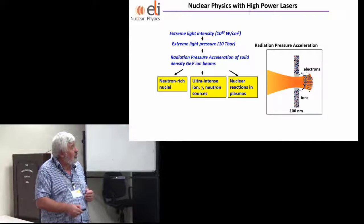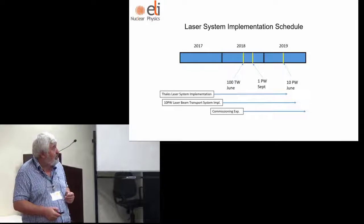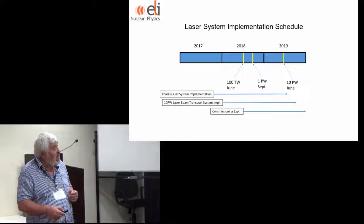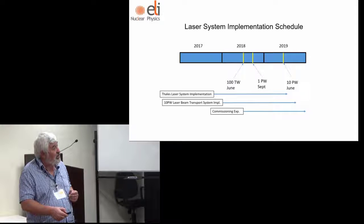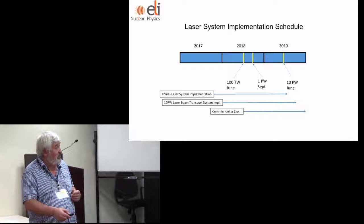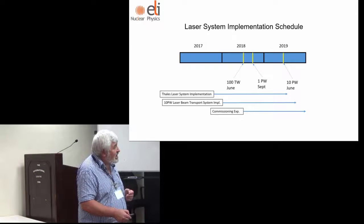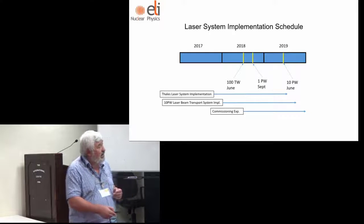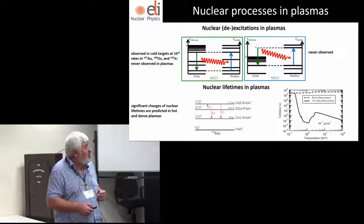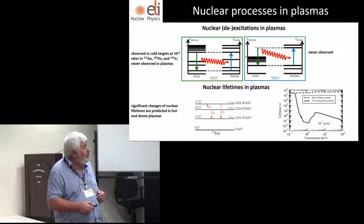We want to have ultra-intense ion, gamma, or neutral sources and we want to study nuclear reactions in plasmas. The timeline: we expect to have 10 petawatt according to the plan in June but we'll get it much earlier. We are building the transport system and commissioning experiments.